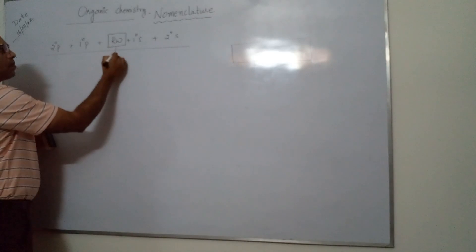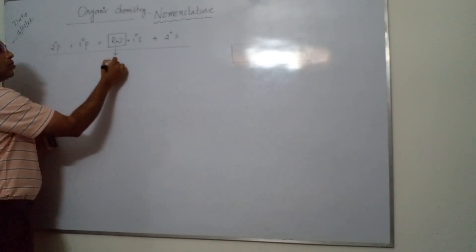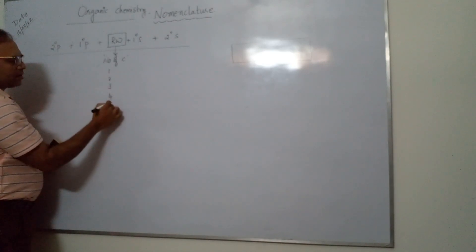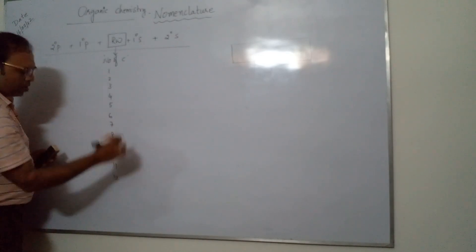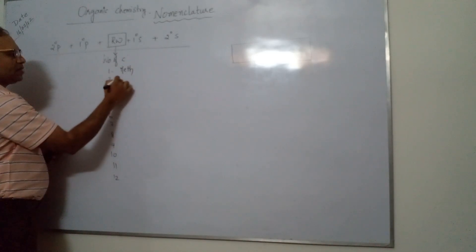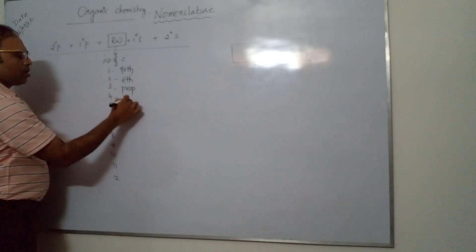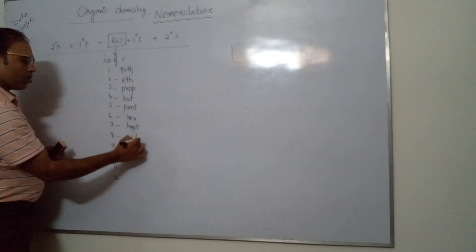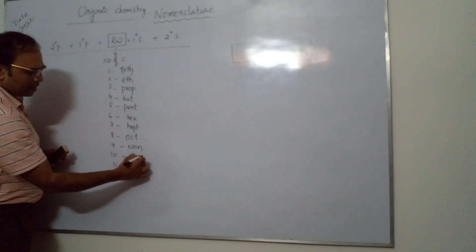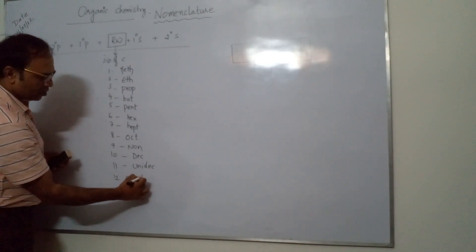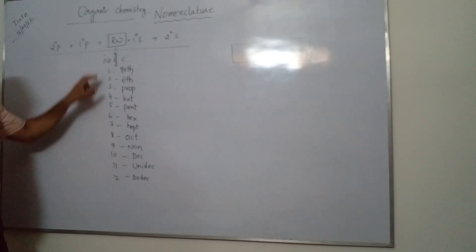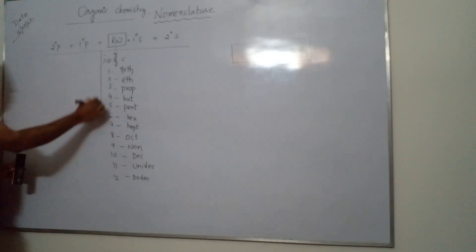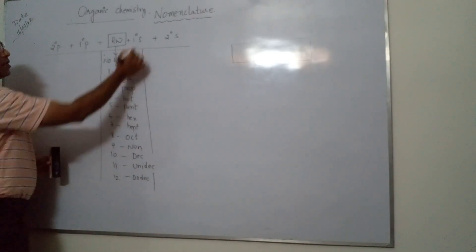The first part is the root word. The root word indicates the number of carbon atoms. The root words for 1 to 12 carbon atoms are: meth, eth, prop, but, pent, hex, hept, oct, non, dec, undec, and dodec. We must always remember to write the root word first.